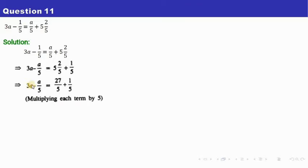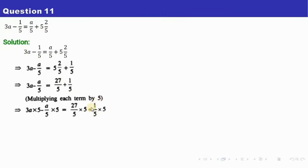We are going to multiply each term by 5. So 3a into 5, a/5 into 5, 27/5 into 5, and 1/5 into 5 — each term is multiplied by 5. What is 3a into 5? It is 3 times 5 equals 15, so it becomes 15a. Now here 5 and 5 get cancelled so only a will be left. Here 5 and 5 get cancelled so only 27 will be left, and here 5 and 5 get cancelled so only 1 will be left.